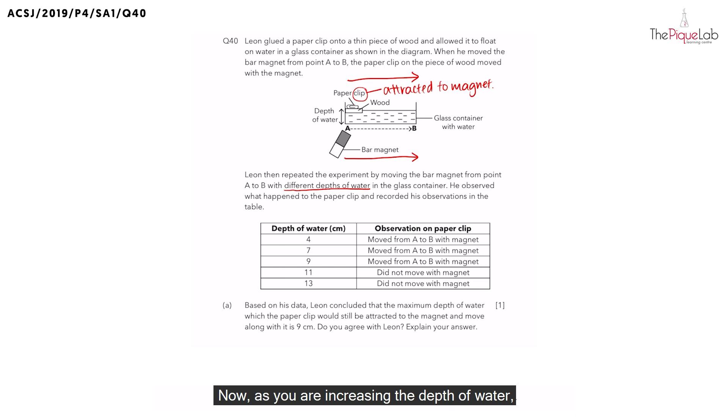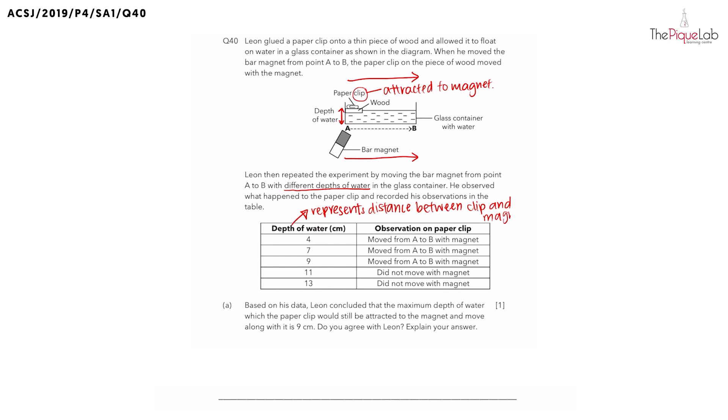Now, as you are increasing the depth of water, you are also changing something. Essentially when the depth of water increases, what you're also doing is increasing the distance between the paperclip and the bar magnet. So the depth of water actually represents the distance between the paperclip and the bar magnet.